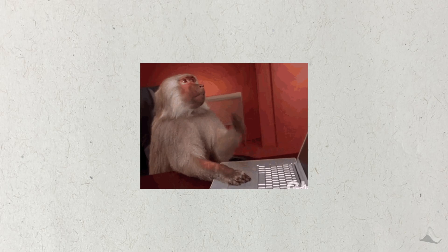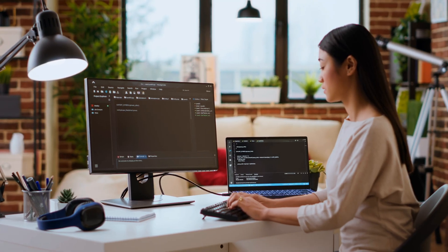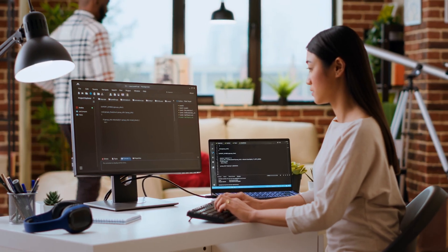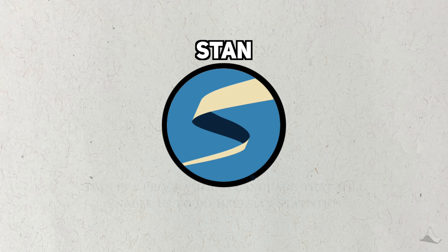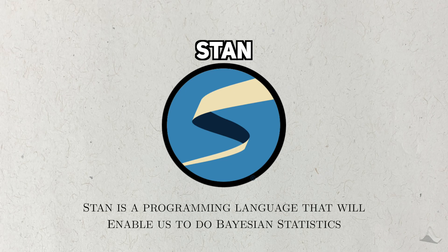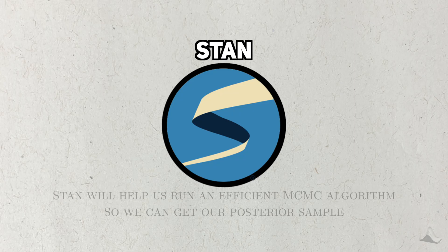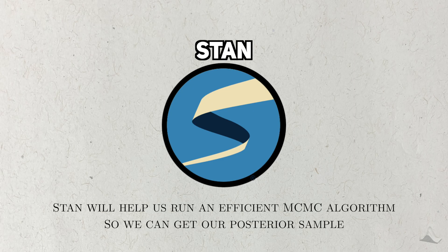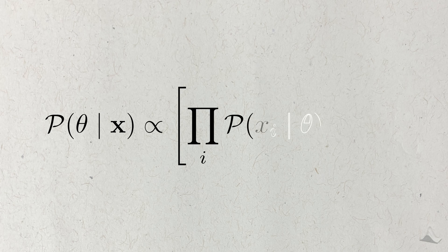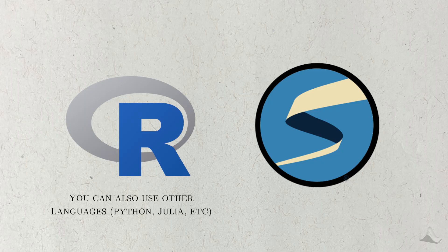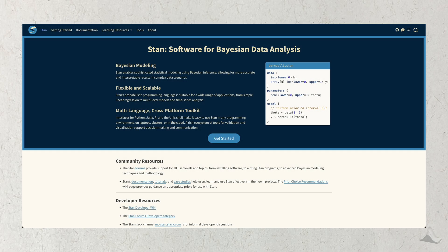Instead of needing to implement MCMC ourselves, we can use tools that smarter people than us have already made. One of these tools is called STAN. STAN is a programming language, and it's the main tool that we'll be using to do Bayesian statistics in this video. It facilitates Bayesian analysis because it helps us run an efficient Monte Carlo algorithm. All we need to do is provide the data and statistical model. For this video, I'll be using R and STAN together, but STAN can also be used with other languages like Python, MATLAB, and Julia.